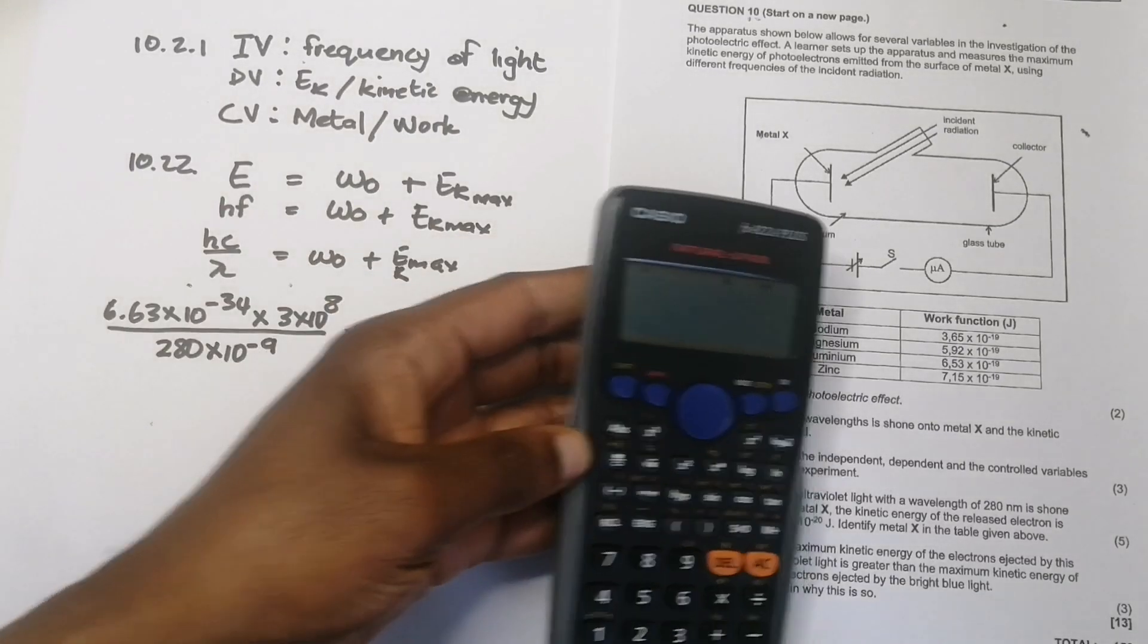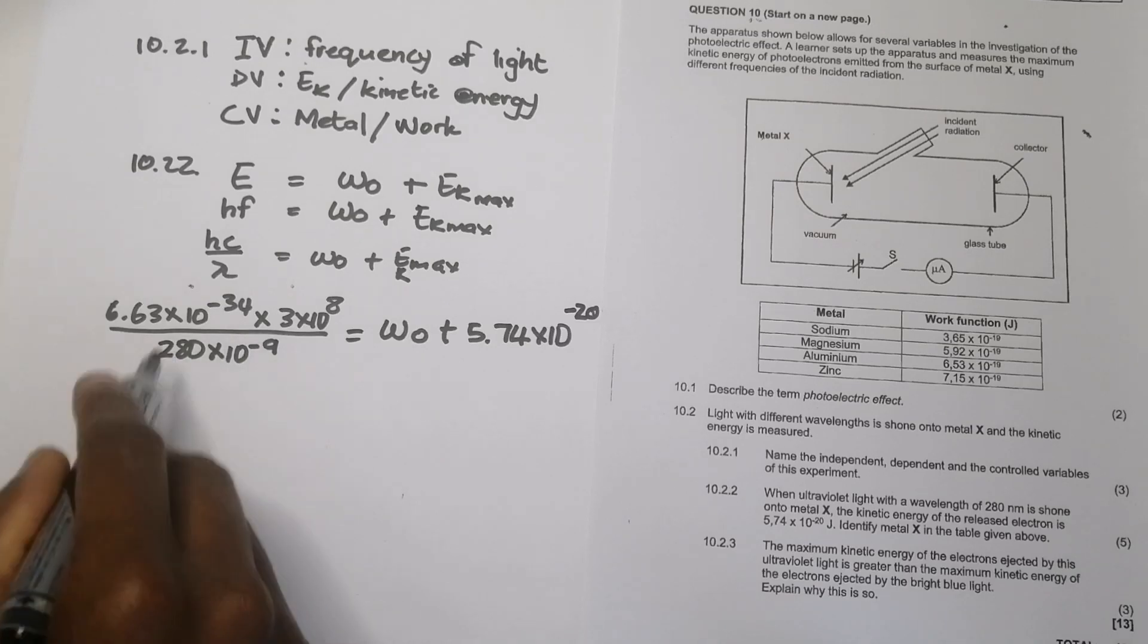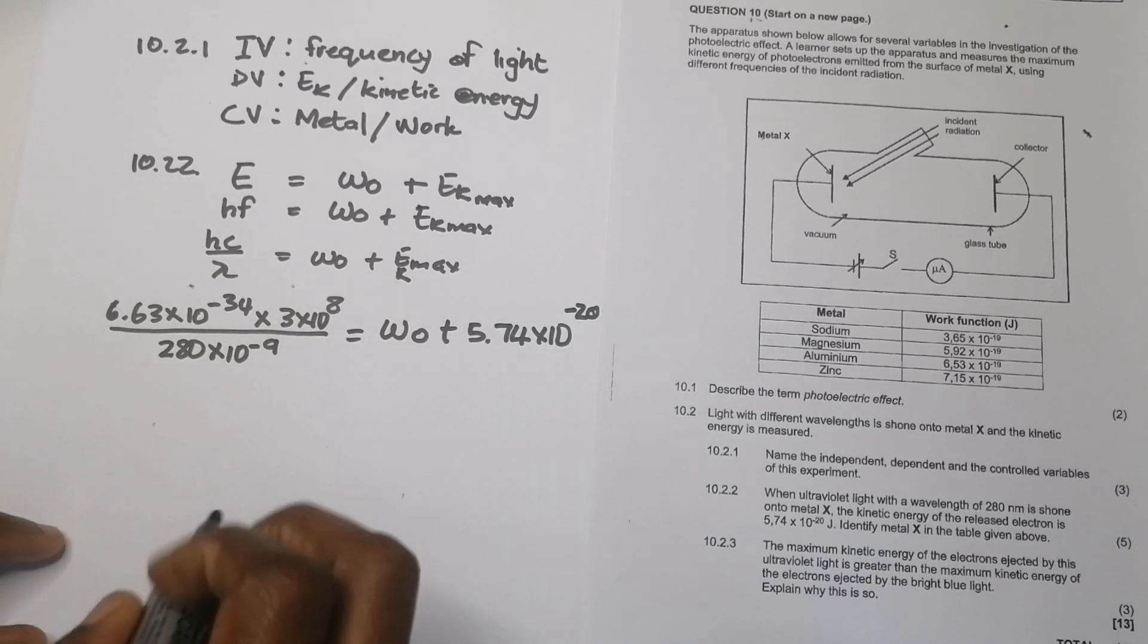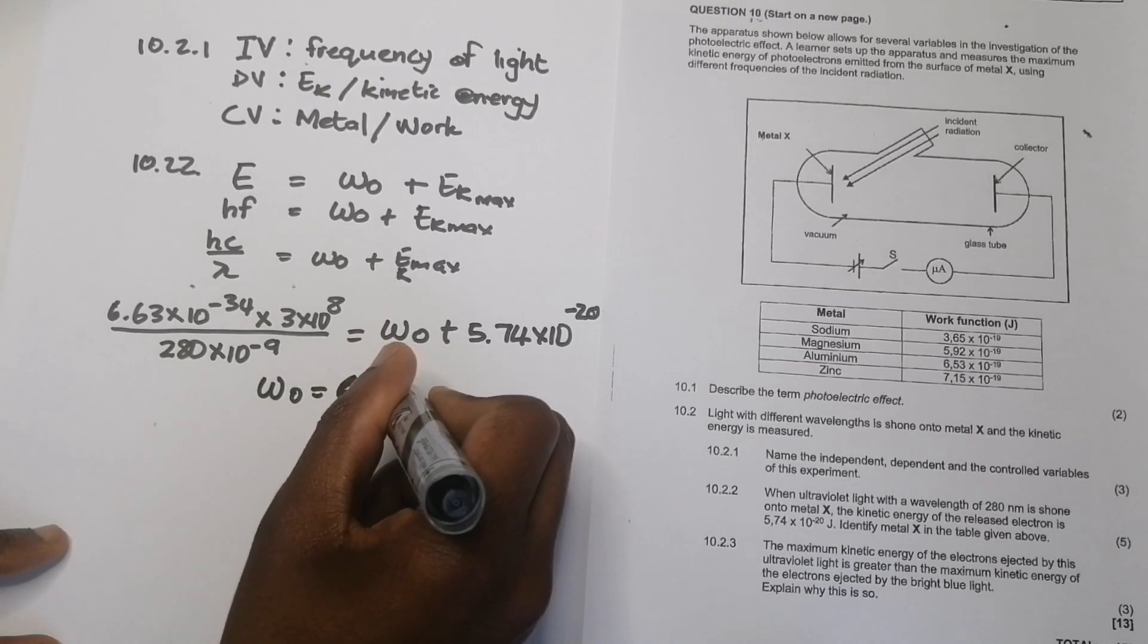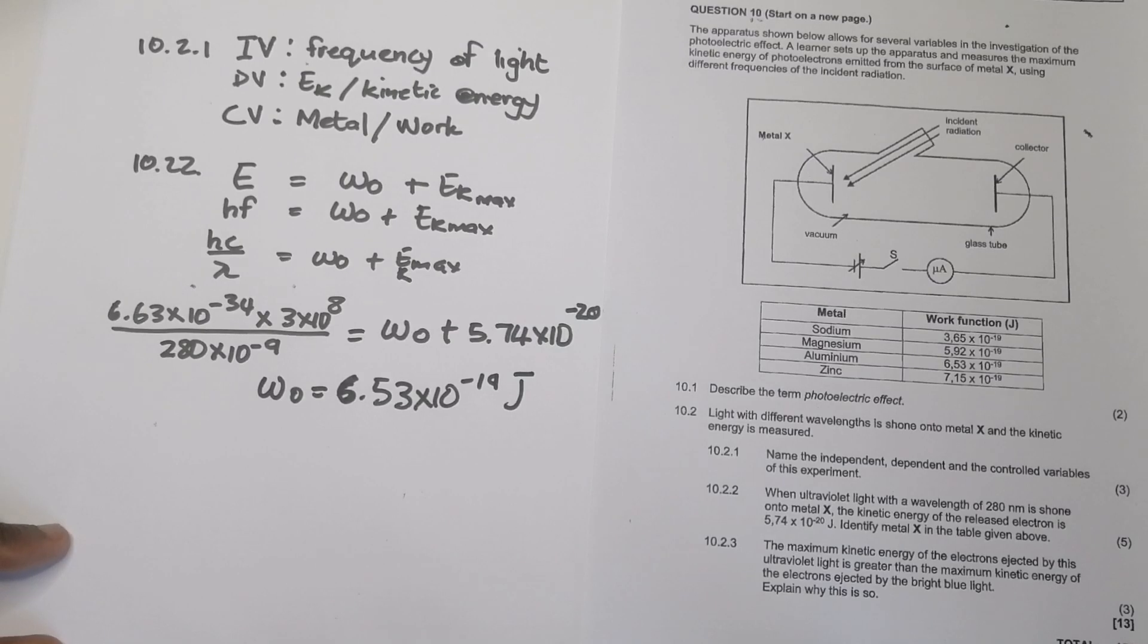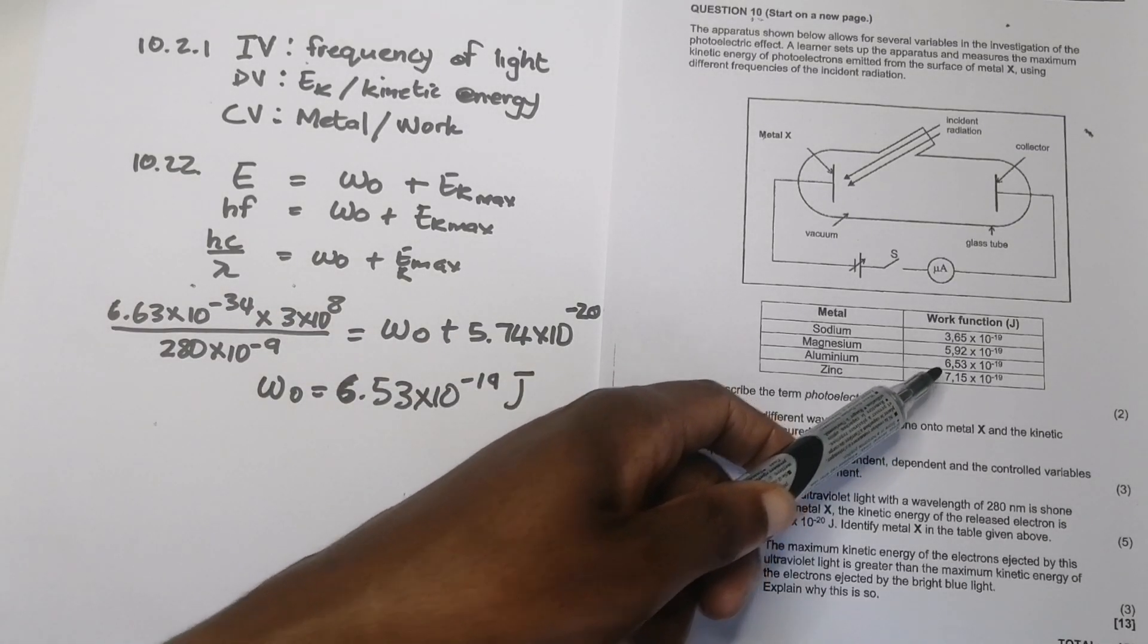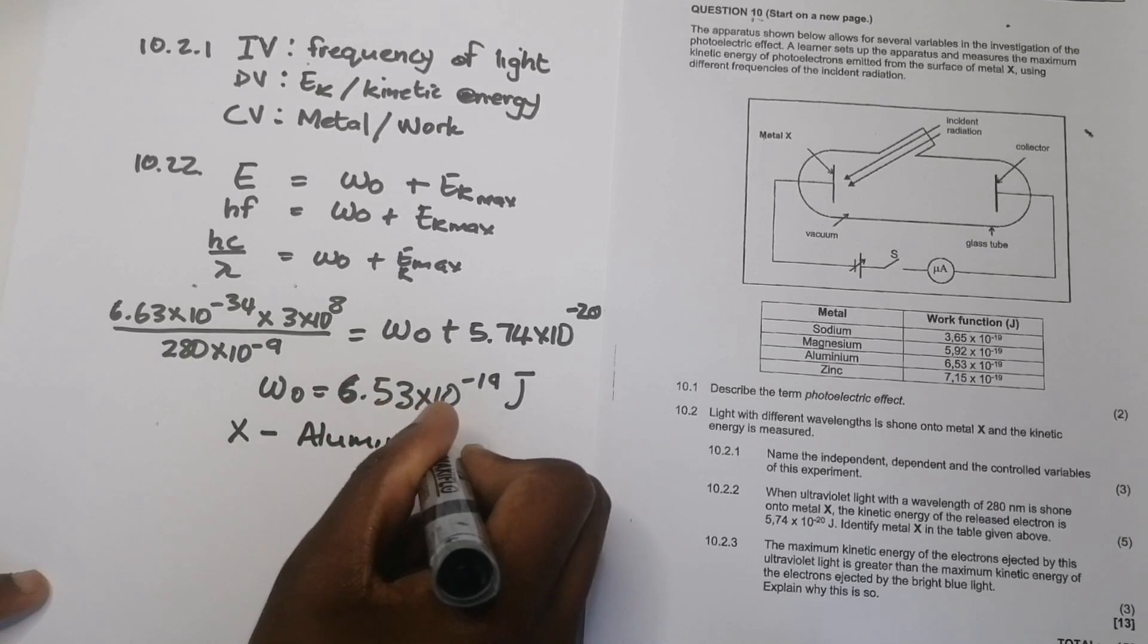But we're also given EK max as 5.74 times 10 to the power minus 20. Right. So all I'm just simply going to do is just work out my work function over there. OK. Let me just pull out my calculator. Right. And nothing more to it. All you are simply doing is just simply calculating those values there. So I'm going to say 6.63 times 10 minus 34. OK. Multiply by 3 to the 8. OK. And when I get that answer there, I just simply subtract that 5.74 times 10 minus 20. And what do you get? So I get an answer. Omega 0 is 6.52 or 5.3 times 10 to the power minus 19. And remember, this is in joules. And remember, we needed to identify which one is metal X. So it means that metal X must be aluminium. Can you see that? OK. Aluminium. So it means that X is aluminium.